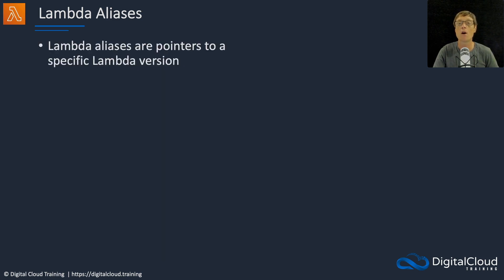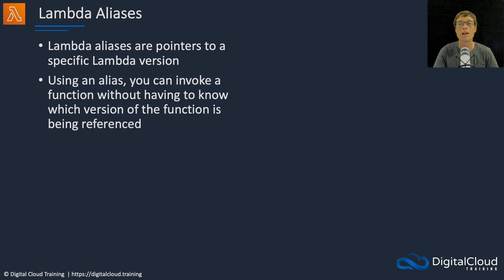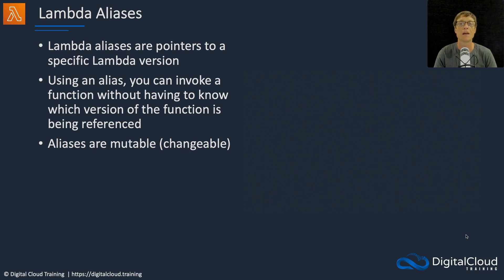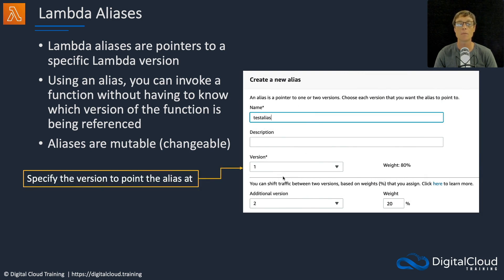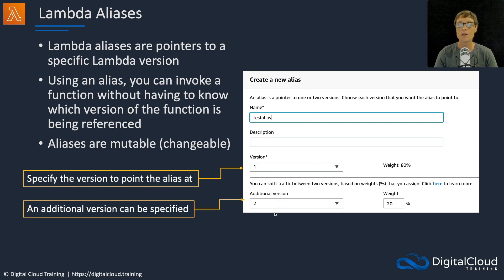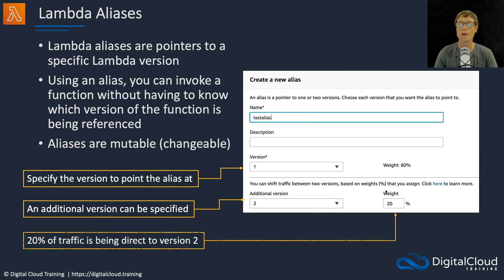Lambda aliases are pointers to a specific version of a Lambda function. Using an alias, you can invoke a function without needing to know which version is actually being referenced. Aliases are mutable — they are changeable. In the console, when creating a new alias called 'test alias', you can specify a version to point the alias at and one additional version. For example, we have version two, and we can specify a weight — let's say 20% of traffic goes to version two — and we can change that at any time.